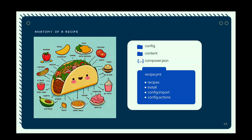So what goes into a recipe? This is a basic idea of the structure. The recipe.yaml is really what does most of the heavy lifting. The composer.json is really the way to make sure your site is going to have all of the dependencies, and then you can optionally have config and content folders as a way to import either static configuration files — most often configuration entities — and content to make sure it becomes automatically populated through your recipe.